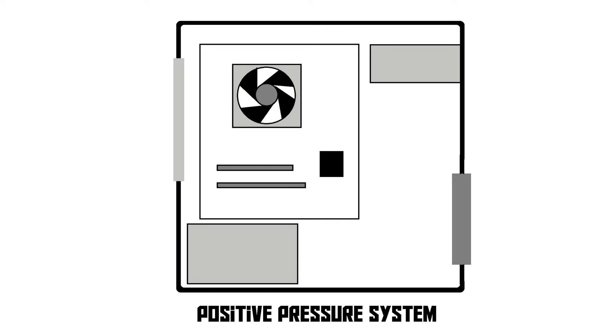Positive air pressure system means that you have more intake fans than exhaust fans. So in our schematic drawing, we have one intake fan right there at the front, and we've got one exhaust grill but no exhaust fan. So more intake fans than exhaust fans.